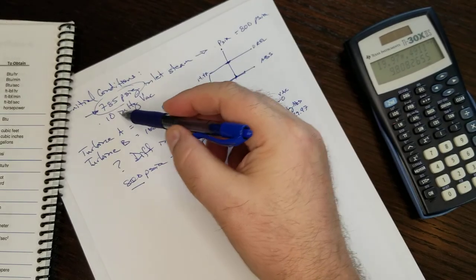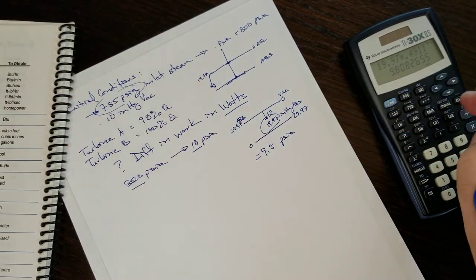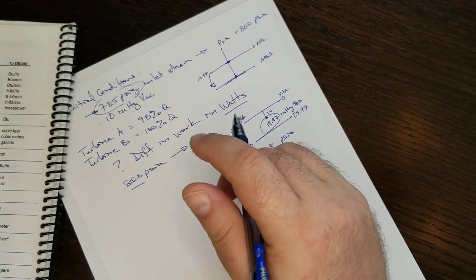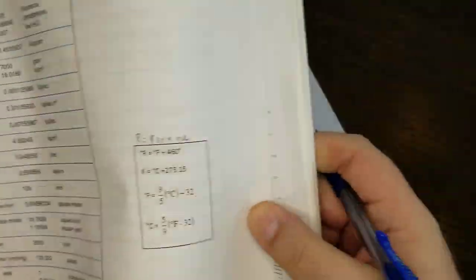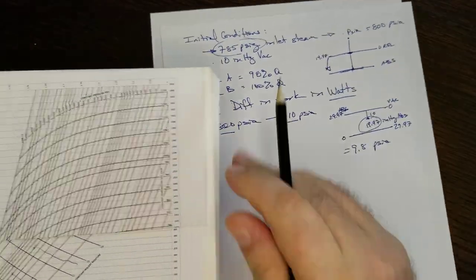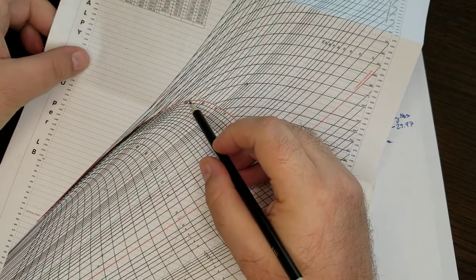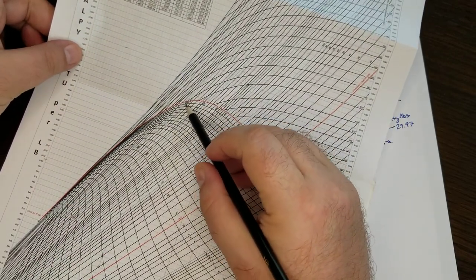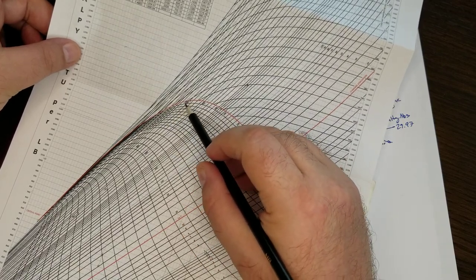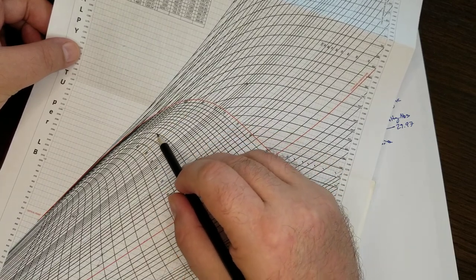All right, let's see what this looks like on our Mollier diagram. 800 PSIA. So we find our constant pressure line of 800 pounds square inch absolute. So the blue line right here is the 1000, that line below it is 900, this line here is 800.